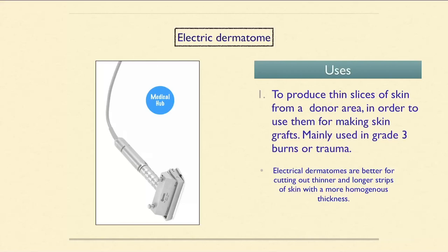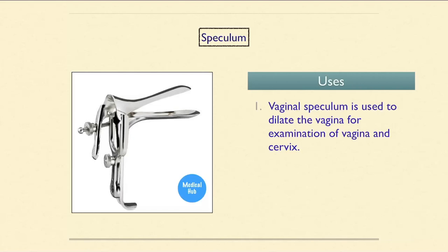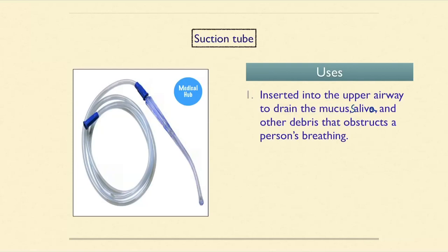Surgical scissors are used for cutting organs, dissecting tissues, removing abnormal or diseased tissues, and cutting bandages, clothing, and sutures. The vaginal speculum is used to dilate the vagina for examination of the vagina and cervix. The suction tube is inserted into the upper airway to drain mucus, saliva, and other debris obstructing breathing.